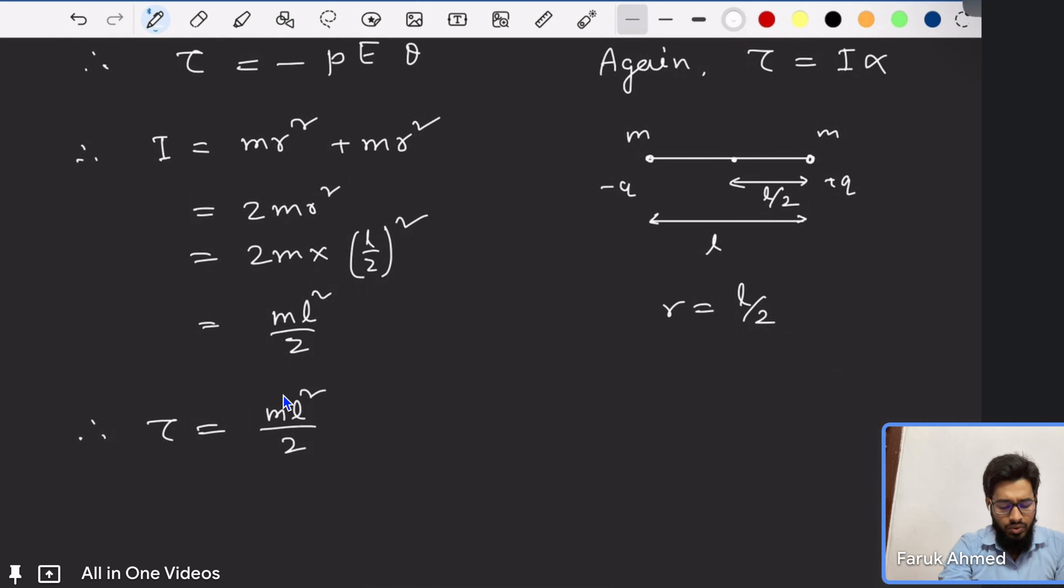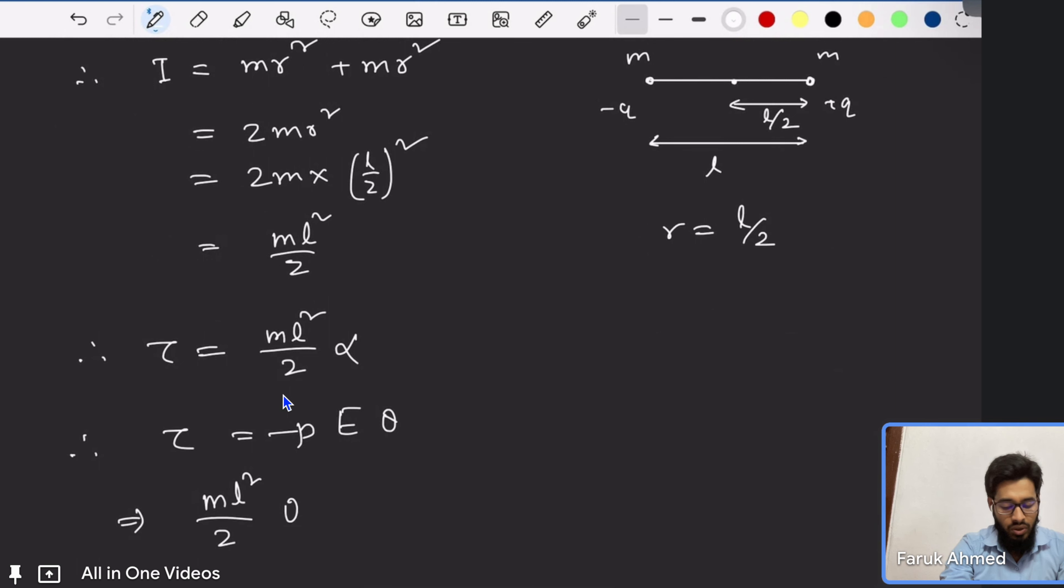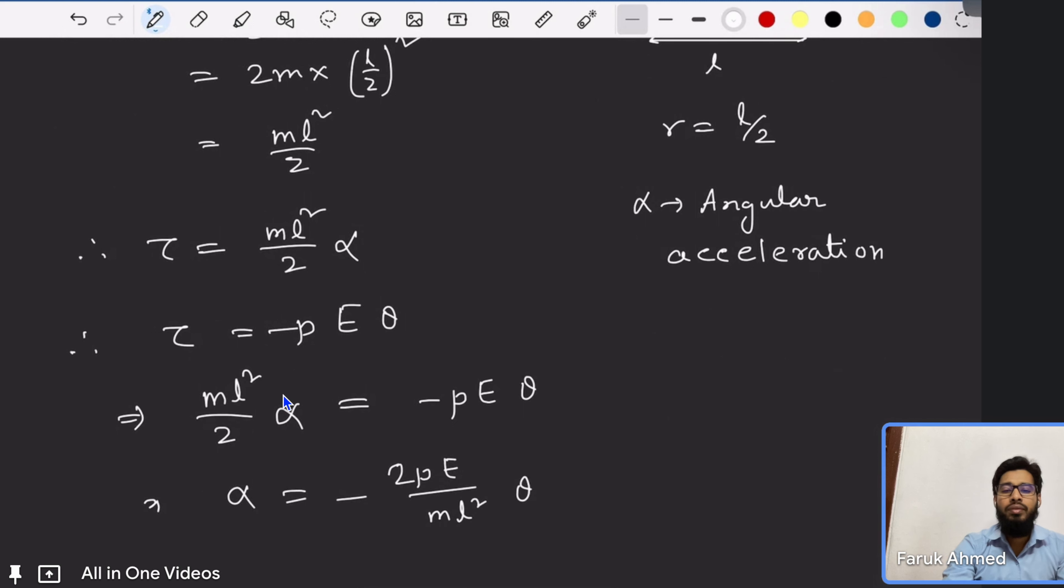Then we can write m l squared by 2 as moment of inertia. Then tau is equal to m l squared by 2 times alpha. Again we know torque is equal to minus p E theta. Therefore we will write m l squared by 2 times alpha, where alpha is angular acceleration, is equal to minus p E theta. So alpha is equal to minus 2 p E by m l squared times theta.